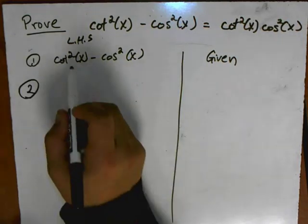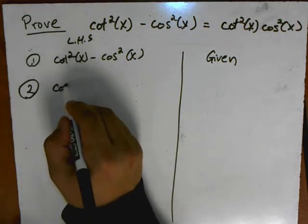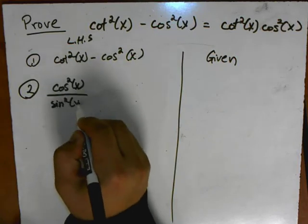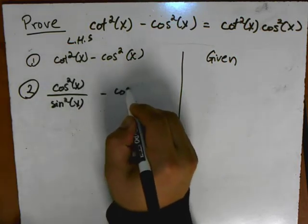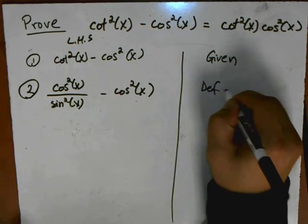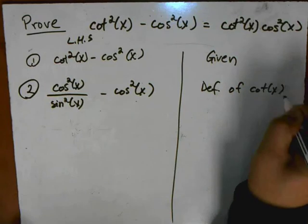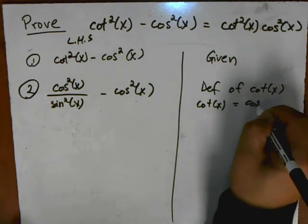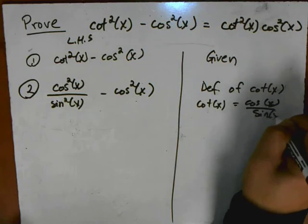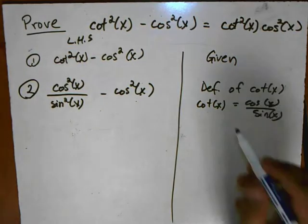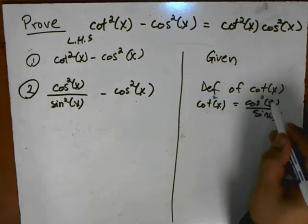In my next step, I'm going to convert cotangent squared to cosine squared divided by sine squared. My reason here is that this is the definition of cotangent — cotangent is really cosine over sine. So if you square cotangent, what you're really doing is just squaring cosine and squaring sine.